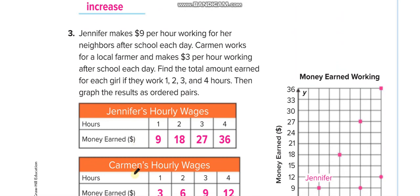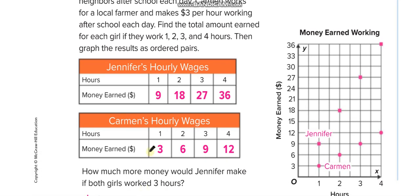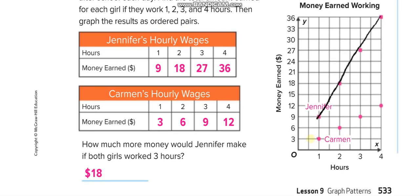Jennifer and Kerman: Jennifer is earning nine dollars per hour and Kerman is earning three dollars per hour. The first column is the X-axis, the second is the Y-axis — one and nine for Jennifer. This line is for Jennifer and this line for Kerman. For three hours, Jennifer earns twenty-seven dollars and Kerman earns nine dollars, so twenty-seven minus nine equals eighteen dollars more.